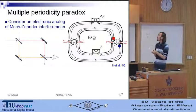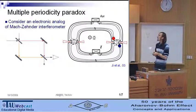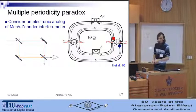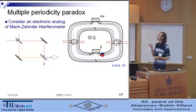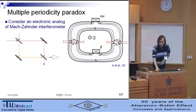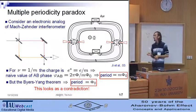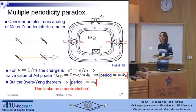Quantum point contacts are used as beam splitters, and the ohmic contacts as source and drain. At filling factor one over m, the charge of quasiparticles is e over m.